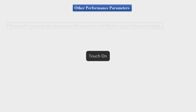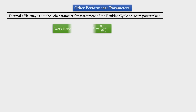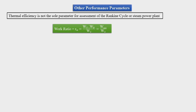Thermal efficiency is not the only performance parameter for a steam power plant. Another important parameter is work ratio, defined as (W_t minus W_p) divided by W_t — that is, net work divided by turbine work.